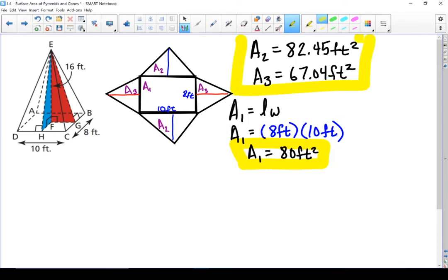So now that I have the areas of all of my faces, I can put it together and find the total surface area of this pyramid. My total surface area is area one, which is our base, plus area two, and because I've got two of those, plus area three. Let's put the numbers in.